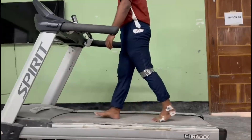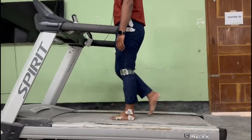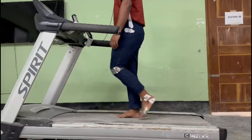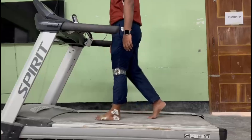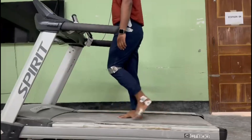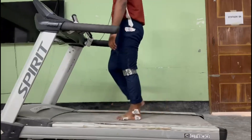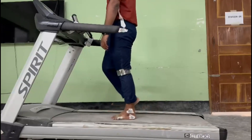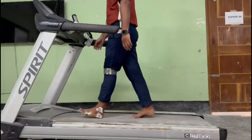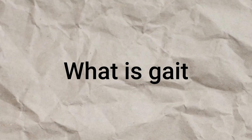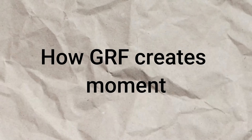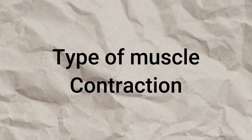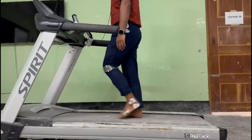Assalamu alaikum everyone. I am Nafim Hassan, currently studying BSc in Prosthetics and Orthotics, first year. Today we will learn about gait analysis and we will discuss about the different joint angles, ground reaction force and movements caused by them, and different kinds of muscle contraction at the different phases of gait. Before we learn the main things, we have to know some basic information: what is gait, the phases of gait, and how ground reaction force creates movement at different joints.